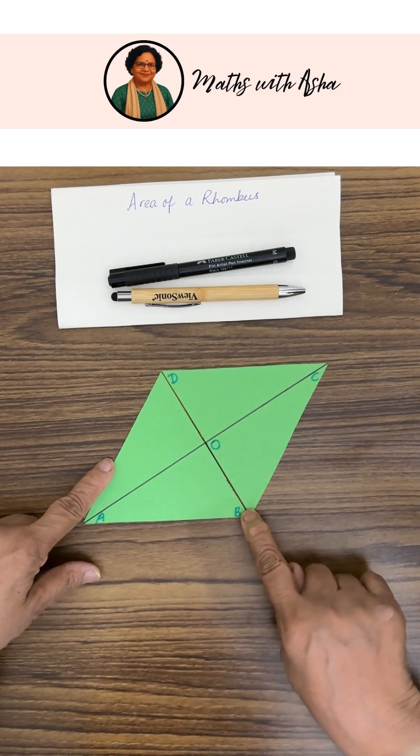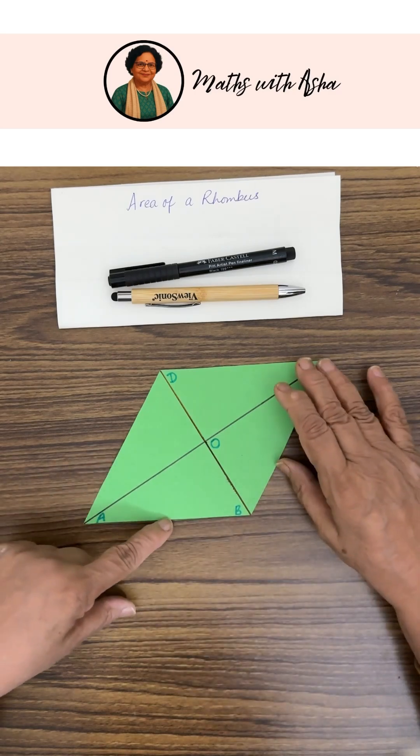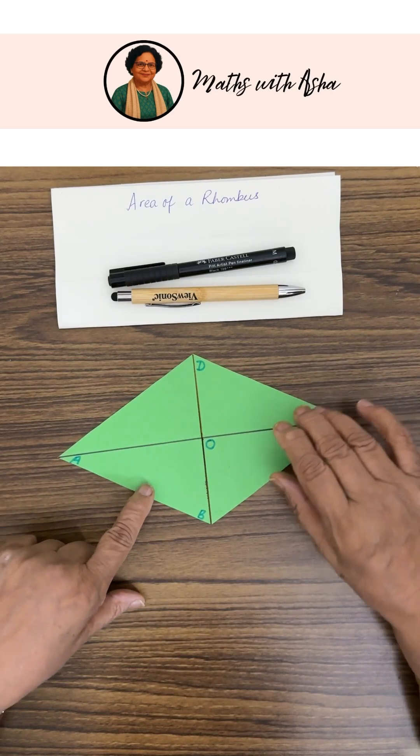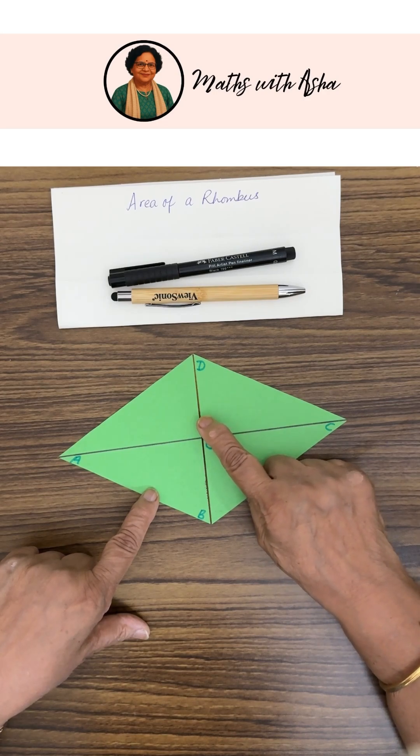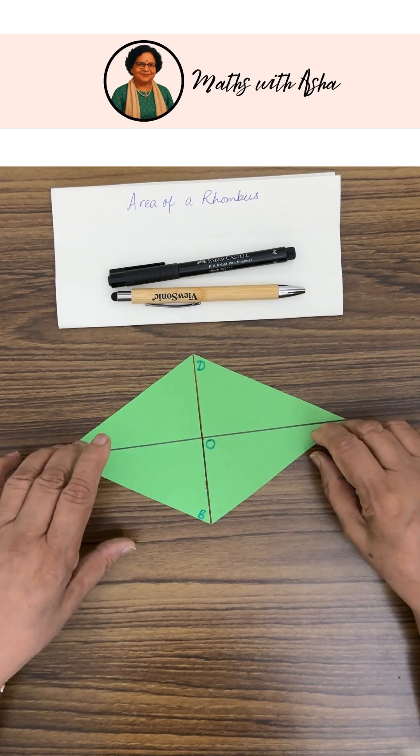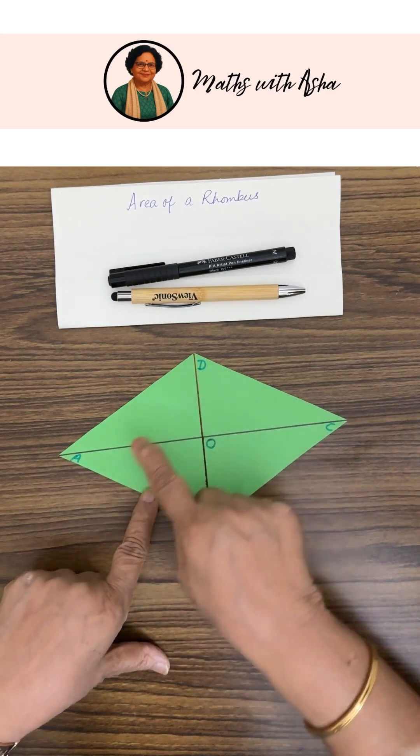So let us take a rhombus ABCD in which all the sides are equal. We also know that the diagonals of a rhombus are not equal to each other and they bisect each other perpendicularly.